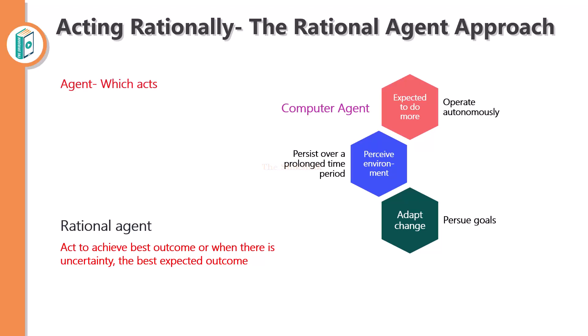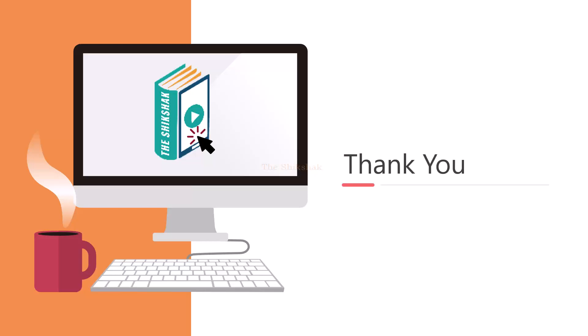This approach has two main advantages. First, it is more general than the law of thought approach, because correct inference is just one of several possible mechanisms for achieving rationality. Second, it is more amenable to scientific development than approaches based on human behavior or human thought. I hope you understand all four approaches very well. Thank you for watching.